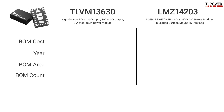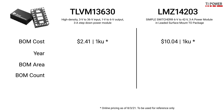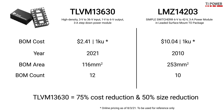Modules have historically carried the reputation of being expensive, but costs have come down significantly thanks to process and material advancements. For example, the cost of the TLVM13630 is about 75% lower than the LMZ14203, which was first introduced in 2010. The total solution size of the TLVM13630 is also significantly smaller.